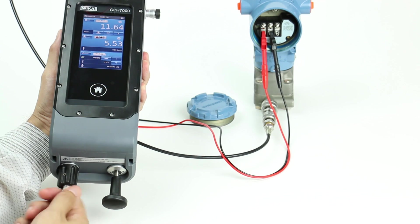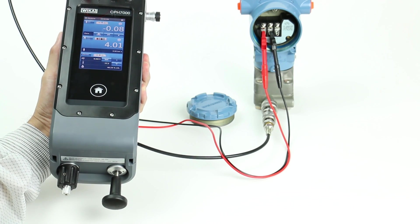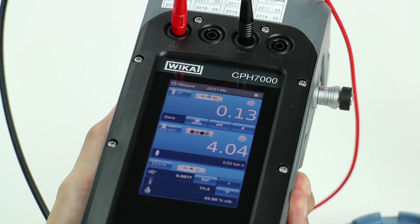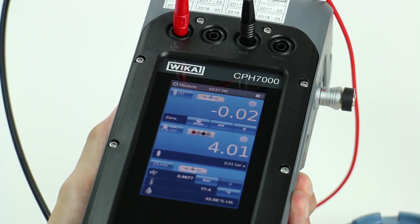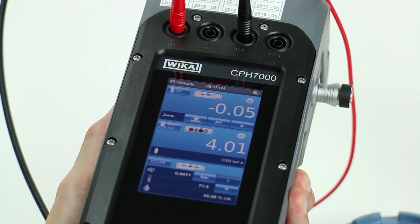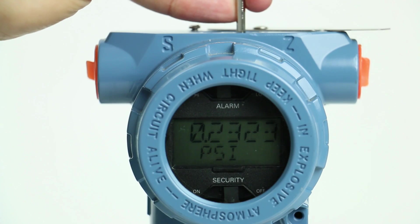During this process we can make adjustments to the 4 to 20 milliamp output of the transmitter. At zero pressure we want the output of the 3051 to be 4 milliamps. With the unit vented to atmosphere, simply press the zero button on the 3051. This will set the output to 4 milliamps at zero pressure.